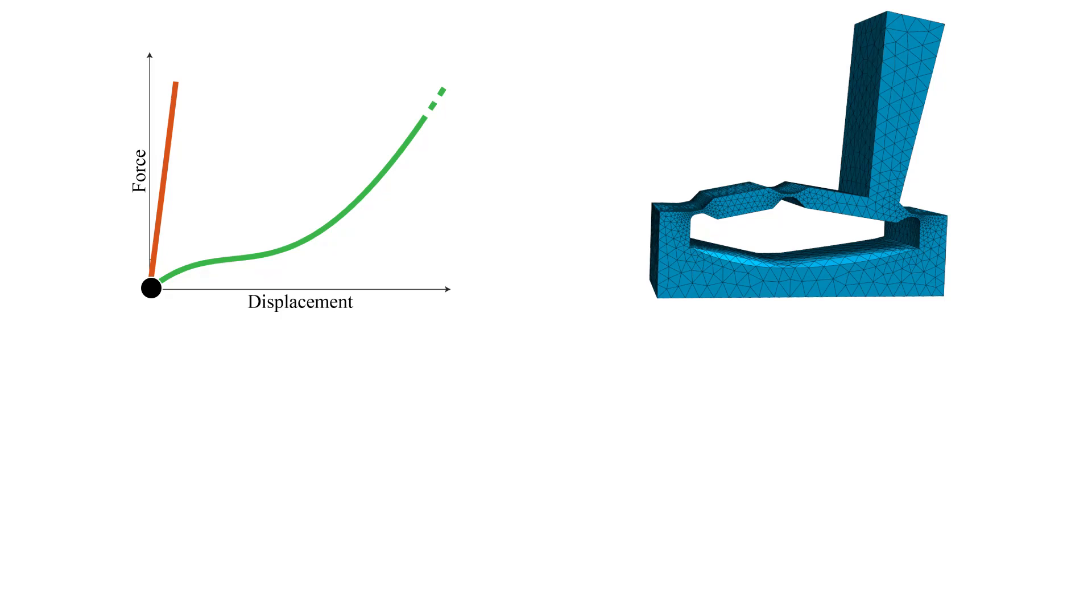Analyzing the initial design with our method identifies switch activation as the first compliant mode, while the next compliant mode, corresponding to twisting, is already significantly stiffer.